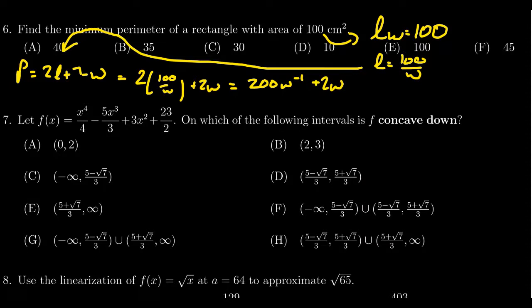I changed it from a fraction to a power to prepare ourselves to compute the derivative as we do these optimization problems. If you calculate the derivative, you're going to get that P prime is equal to negative 200 W to the negative two plus two. And so we have to figure out when this thing is equal to zero.